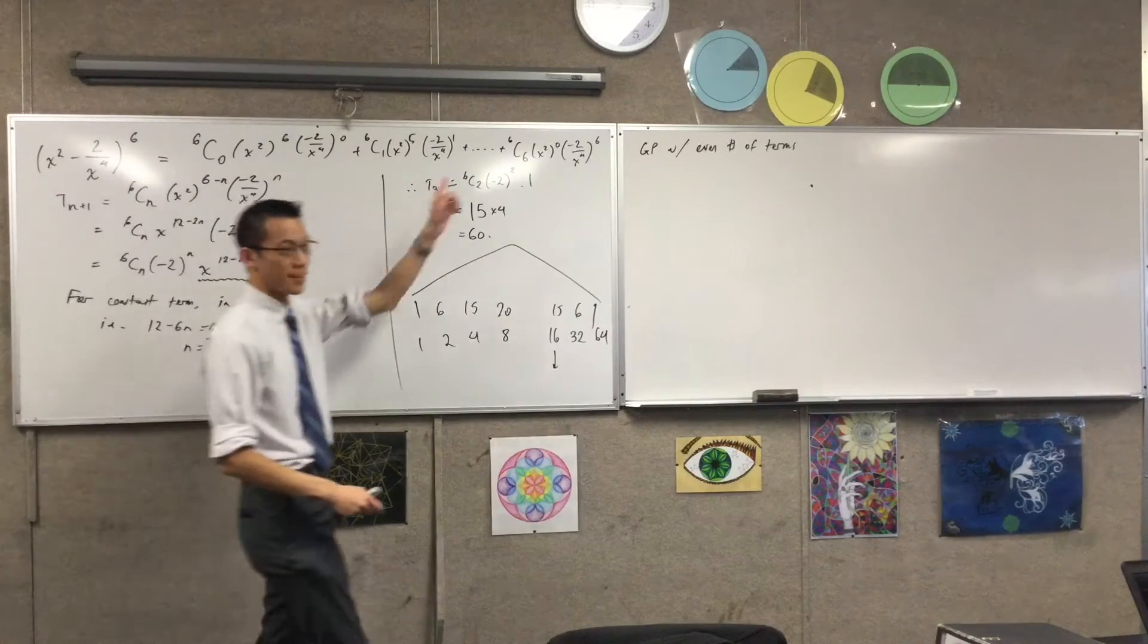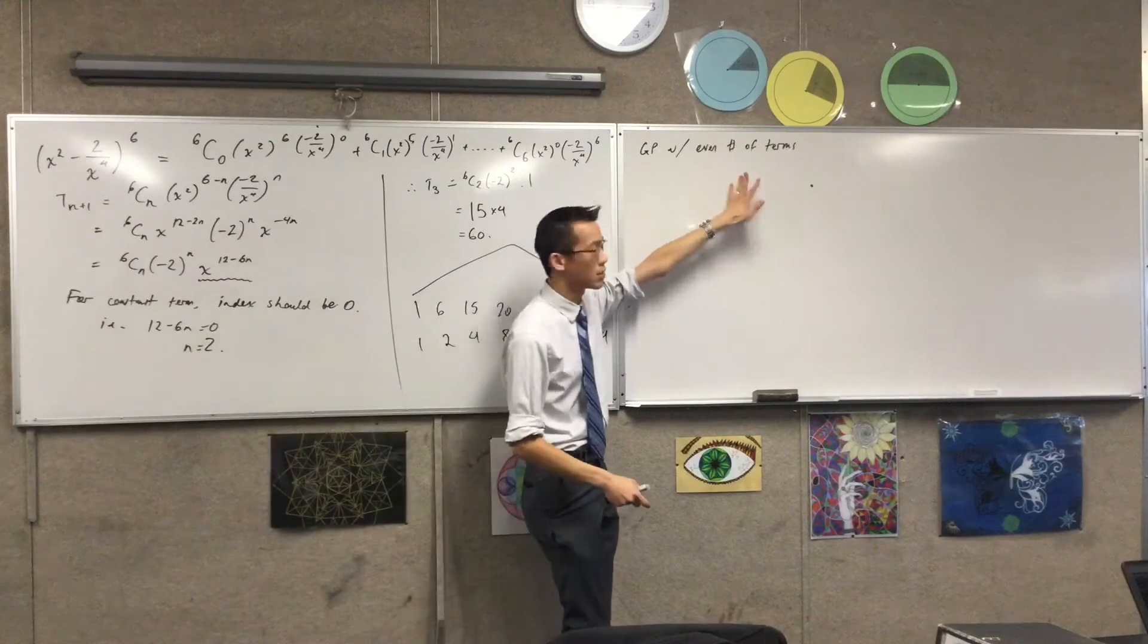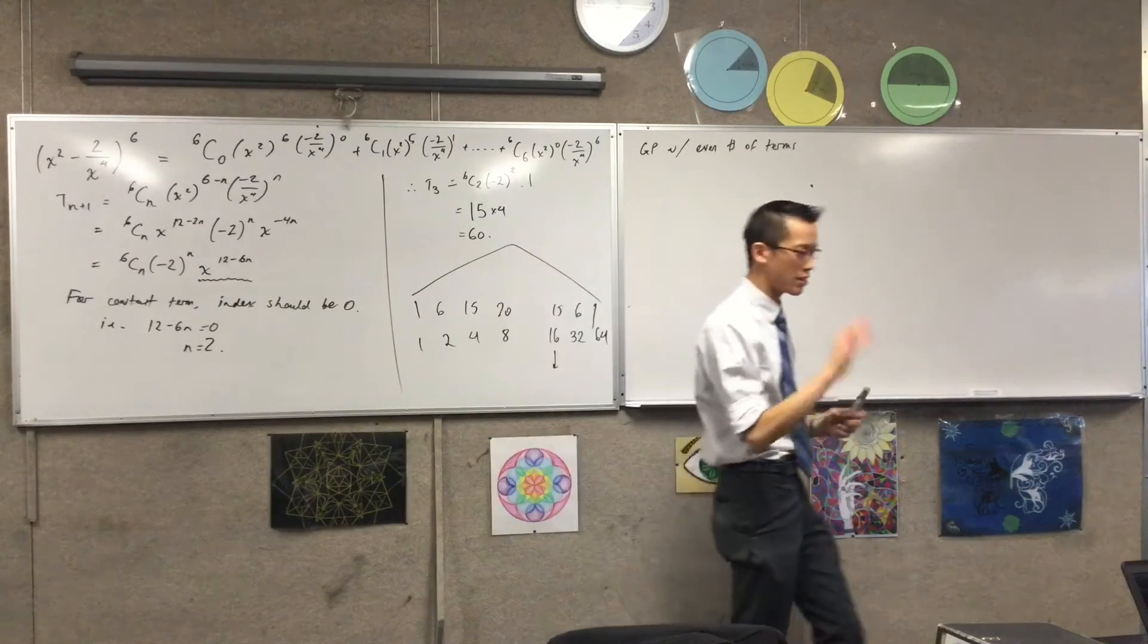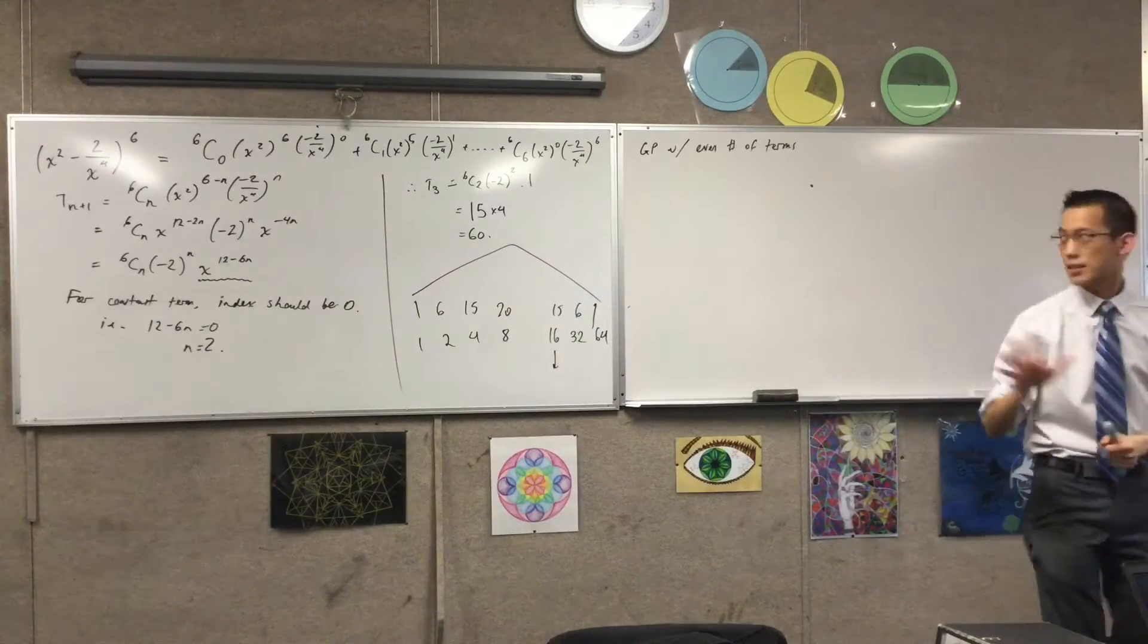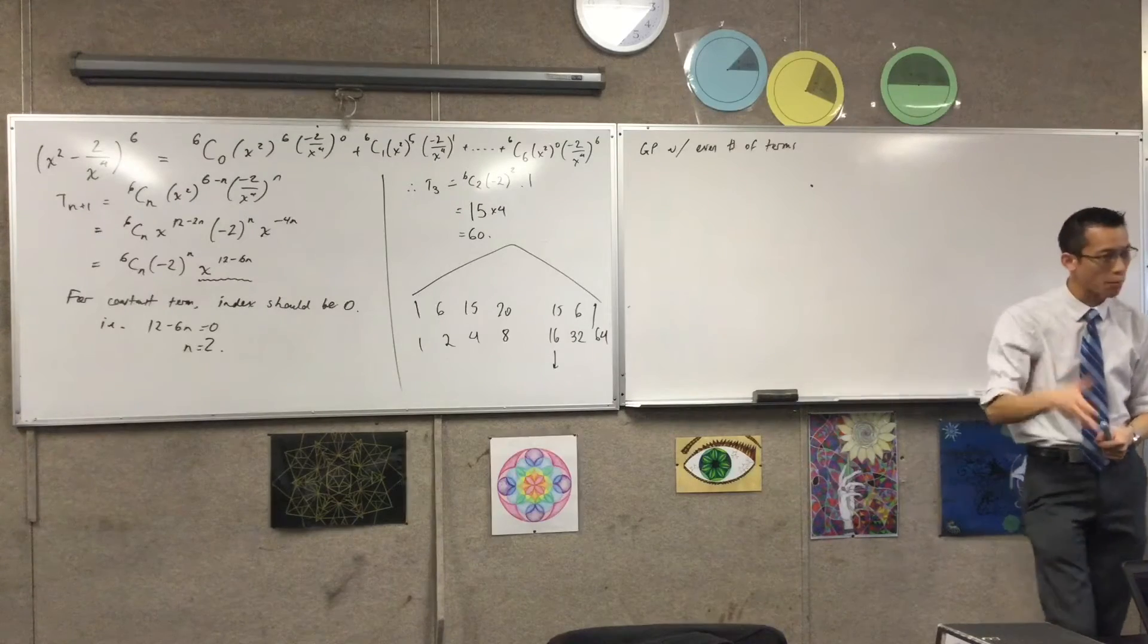Let me say that again. GP, even number of terms. The sum of the whole series is 5 times bigger than the sum of the terms in the odd places.